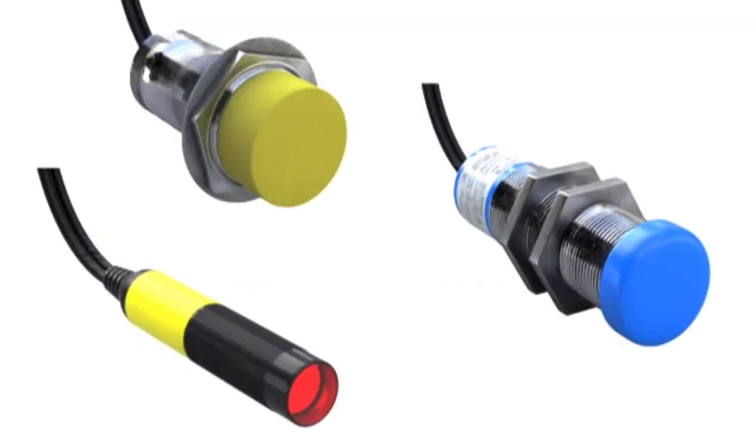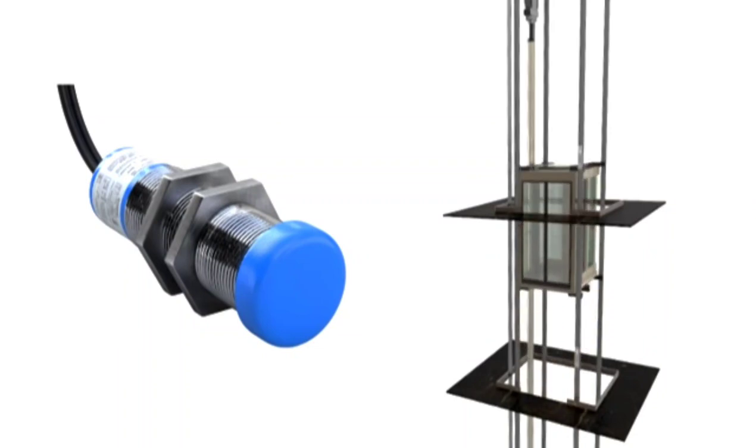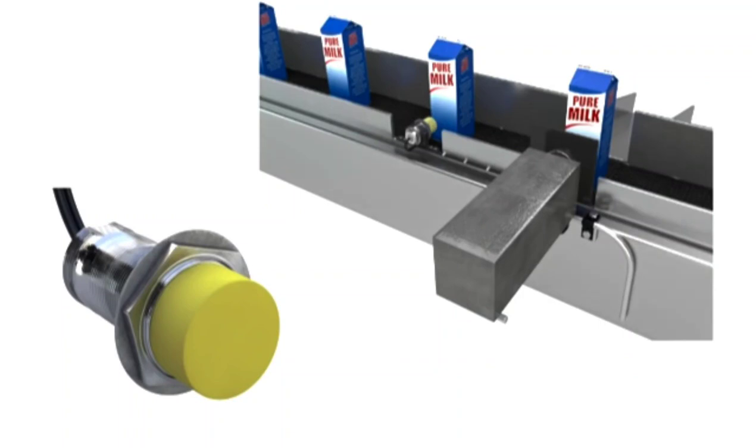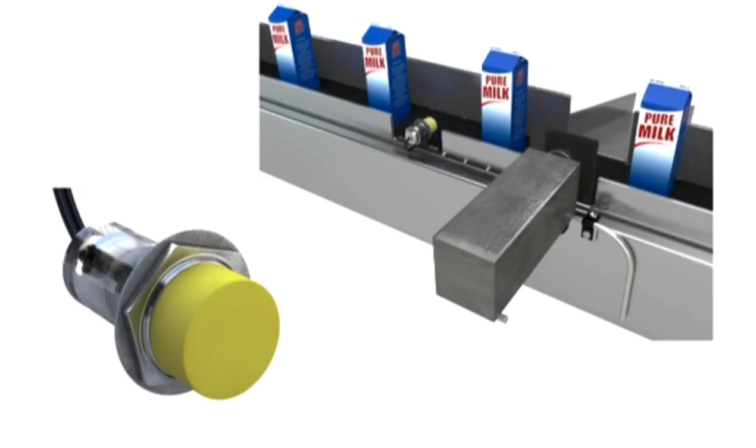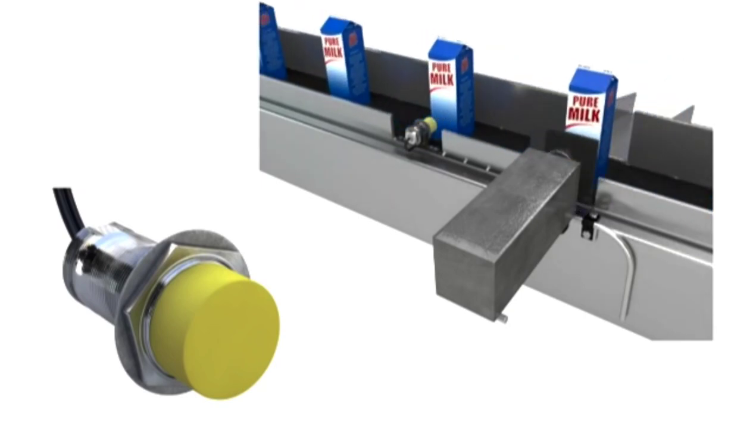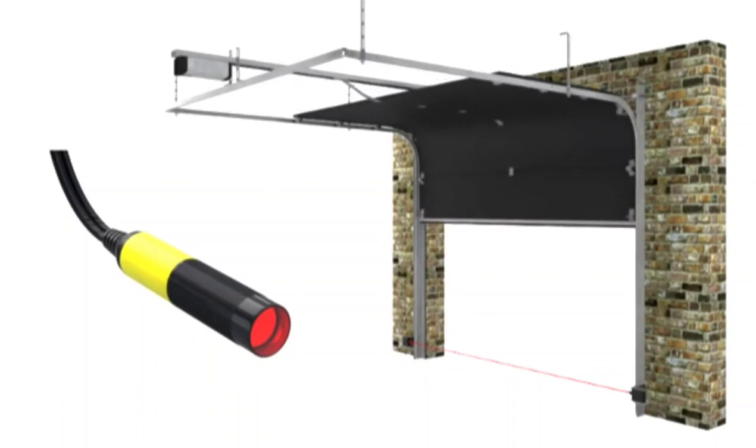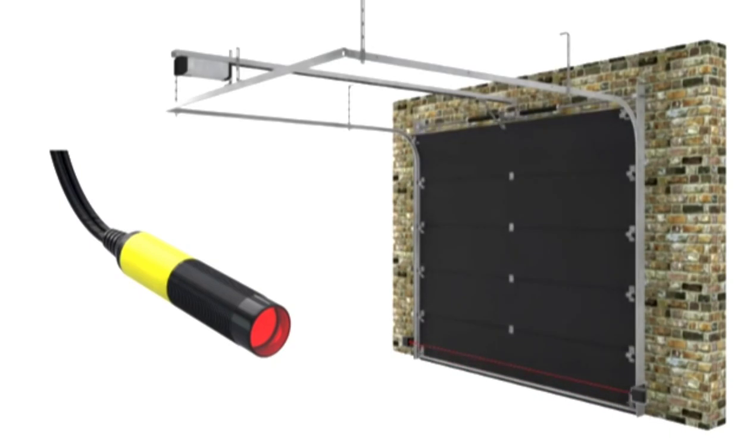Sensors of various types help us in everything we do and consume. Inductive proximity sensors are used in elevators, for example. Capacitive proximity sensors are used to detect liquids and other dielectric materials on the manufacturing floor. And photoelectric sensors are used in our homes and in countless other applications. Let's take a closer look at how these three common types of sensors work.